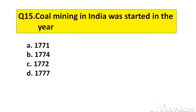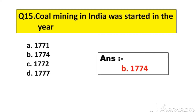Question number 15. Coal mining in India was started in the year. Option A: 1771, B: 1774, C: 1772, D: 1777. The right answer is option B: 1774.